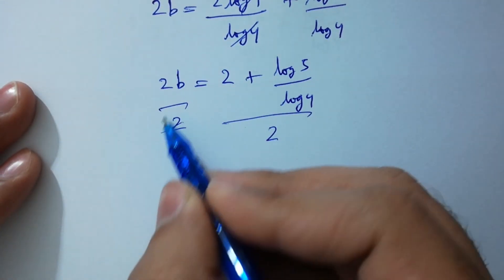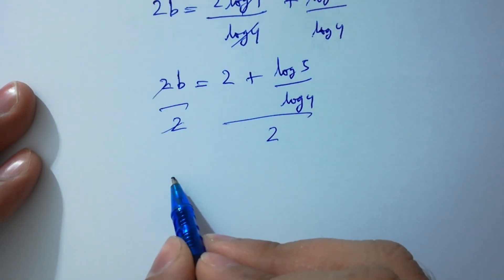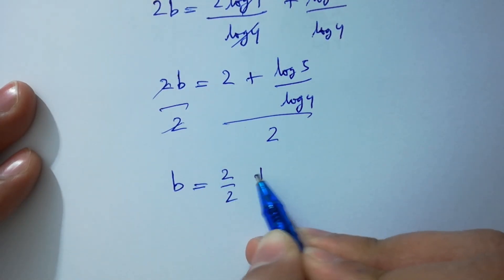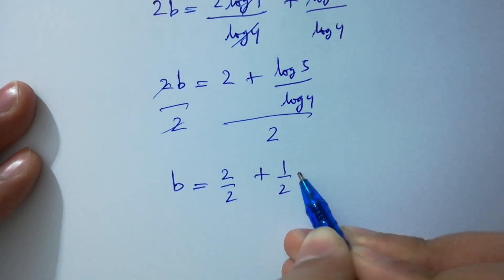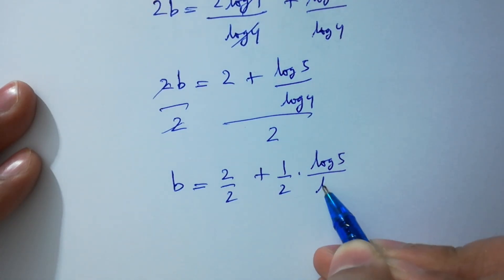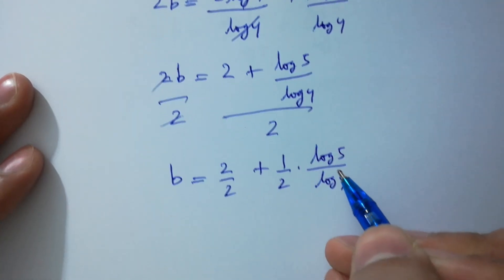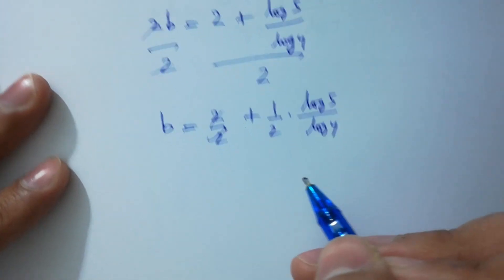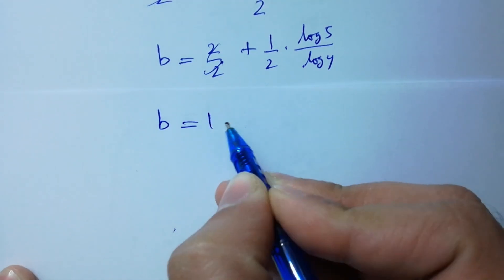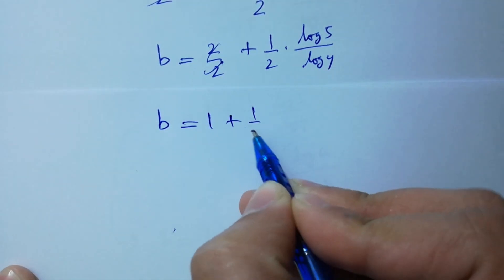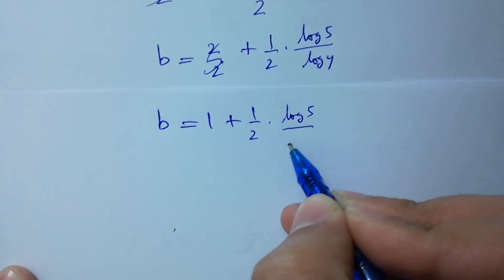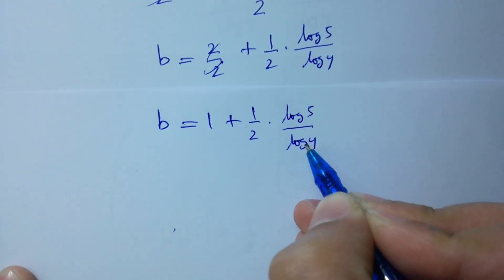2 and 2 will be cancelled, so 2B divided by 2 gives 2 over 2 plus 1 over 2 times log 5 over log 4. Therefore B equals 1 plus 1 over 2 times log 5 over log 4.